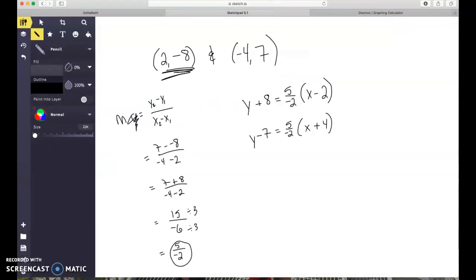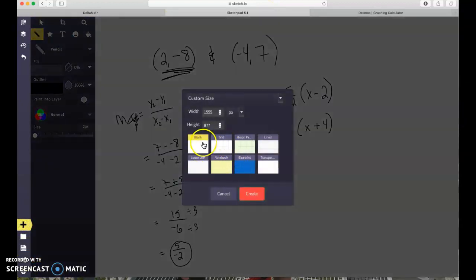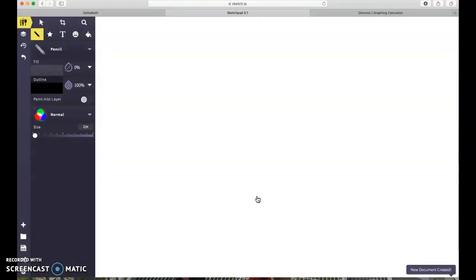Negative 3, 3 and negative 6, 2. Let's see here. Let's get a new blank page. So our points are negative 3, 3 and negative 6, 2.